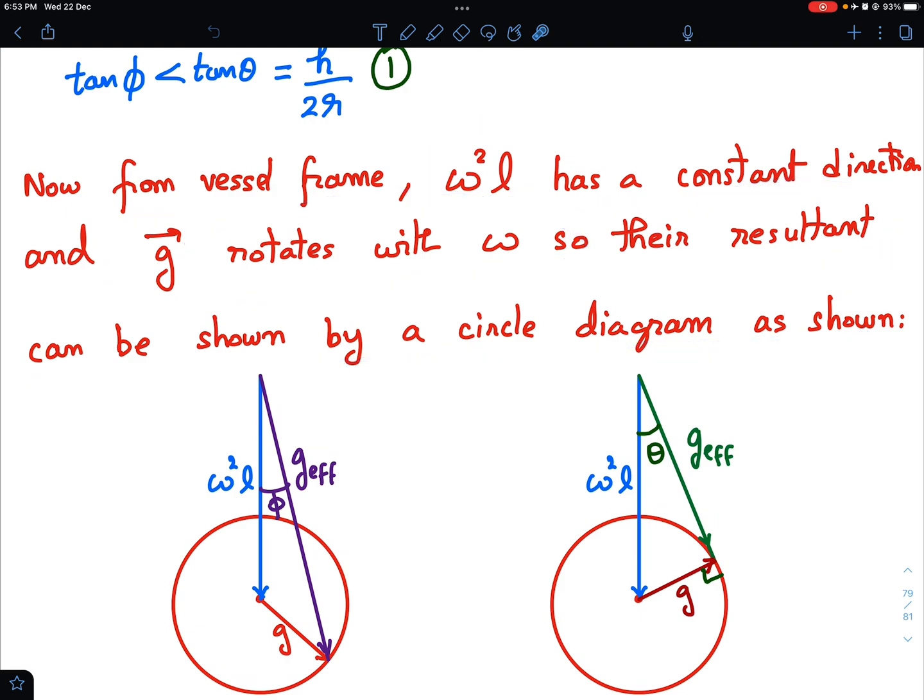From the vessel frame, omega squared L has constant direction and G rotates with omega, so their resultant can be shown by a circle diagram as shown in the figure. This blue vector is the omega squared L vector, which I am not changing the direction because I am looking from the vessel frame. So always radially outward. And the G vector, the resultant of this vector and G vector, that will keep on changing direction. Because this is one vector and this G is the rotating vector. I can draw it as rotating on a circle of radius G. And then the resultant is this vector plus this vector, this becomes the G effective vector.